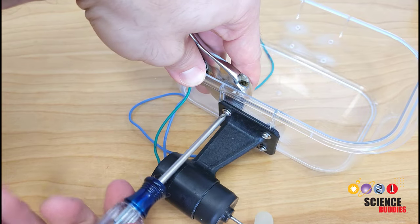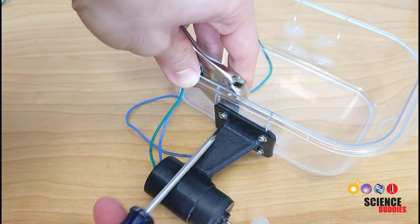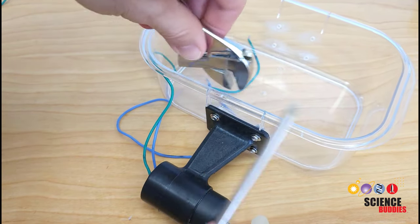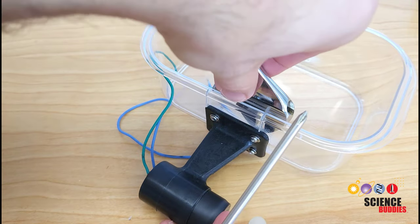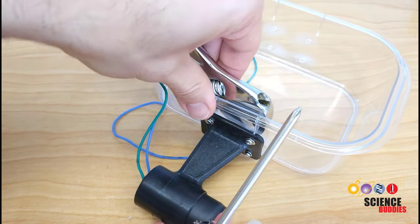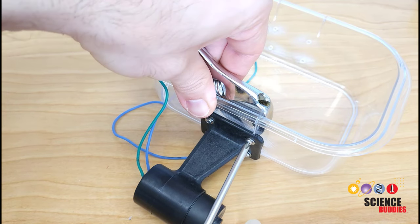Once you've drilled all the holes, you can start mounting hardware to your container. You'll want to tighten everything down snugly, but not so tight that you crack the container. It's also a good idea to use stainless steel hardware so it doesn't rust since you'll be using this in the water.